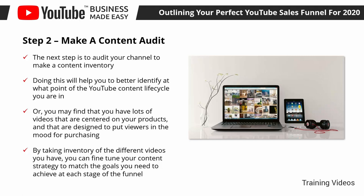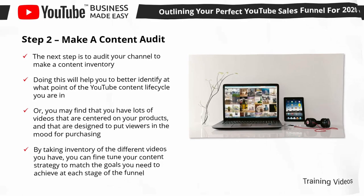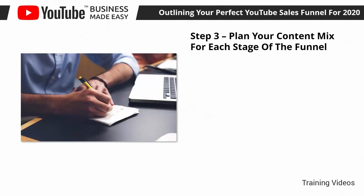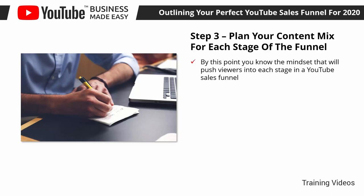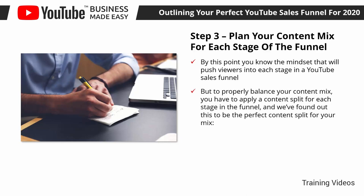By taking inventory of the different videos you have, you can fine-tune your content strategy to match the goals at each stage of the funnel. In other words, you can find out how many videos you need to create to have an equal number for each stage. Step three: plan your content mix for each stage of the funnel. By this point, you know the mindset that will push viewers into each stage and have a clearer idea of the type of content you need to produce to balance things out.